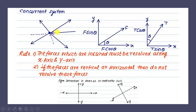What is a concurrent system of forces? A number of forces acting at a point we call a force system. If all the forces in the system have their lines of action meeting at a single point, then it is called a concurrent force system. More than two forces we call a system of forces, and if their lines of action meet at a single point, that system of forces is called a concurrent system of forces.